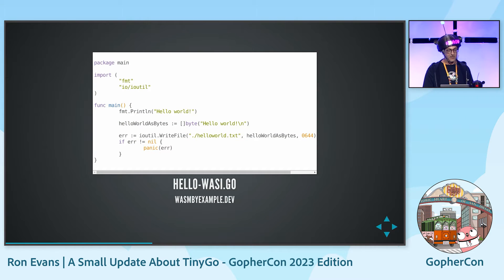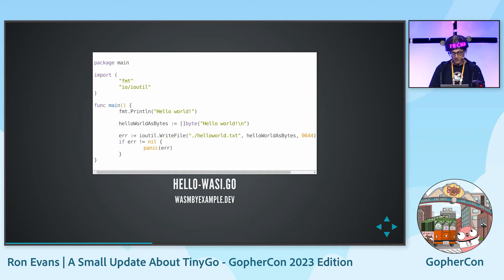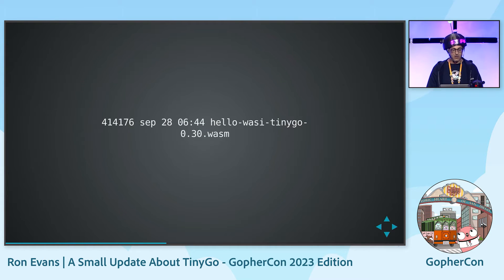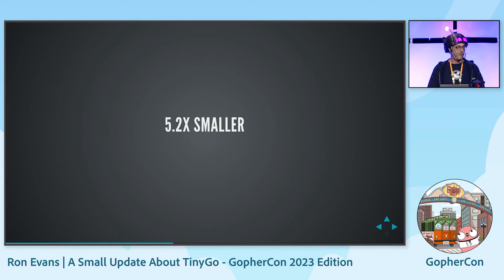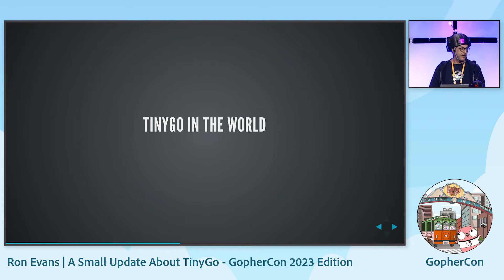I've been accused of that being a disingenuous example, so let's look at a Hello WASI that does a little bit more. It brings in the fmt package and IOUtil, so it's got reflection and all the goodies — from the wasmbyexample.dev website. Compiled with BigGo it is 2.15 megabytes; compiled with TinyGo it is 414K, so it's 5.2 times smaller. TinyGo still has a place in this world for very small things.